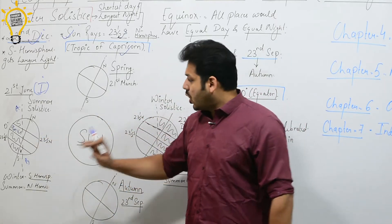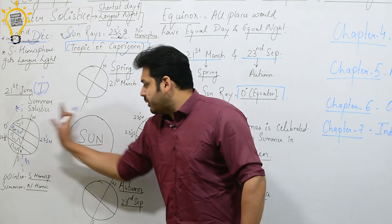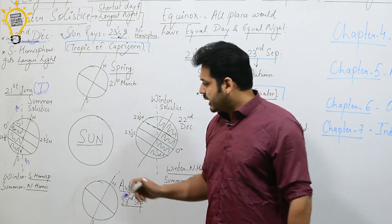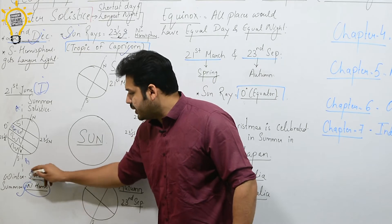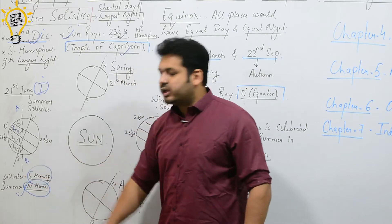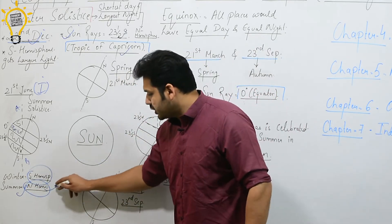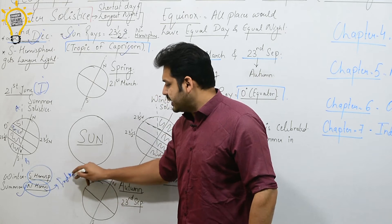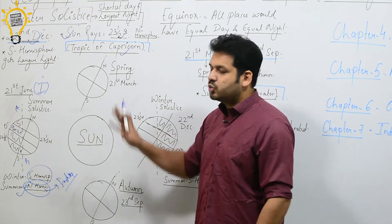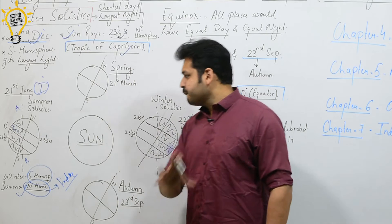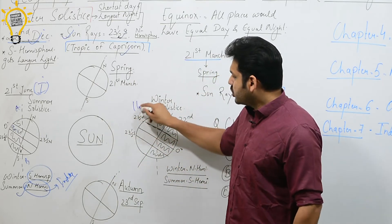Because the Northern Hemisphere is tilted toward the sun, summer will be in the Northern Hemisphere and winter will be in the Southern Hemisphere. India is in the Northern Hemisphere, so India will have summer on 21st June.